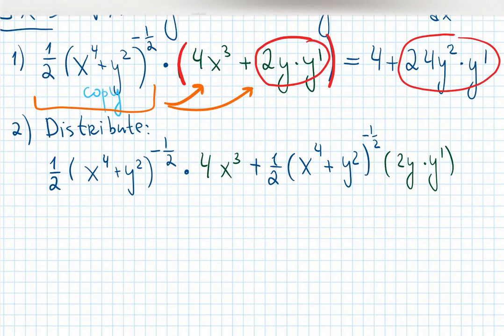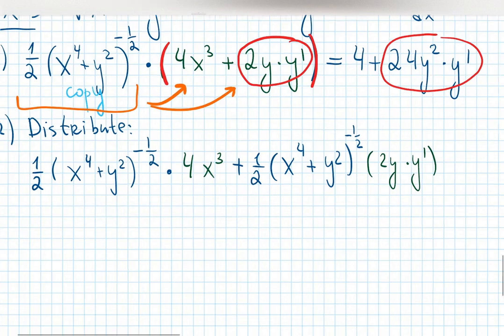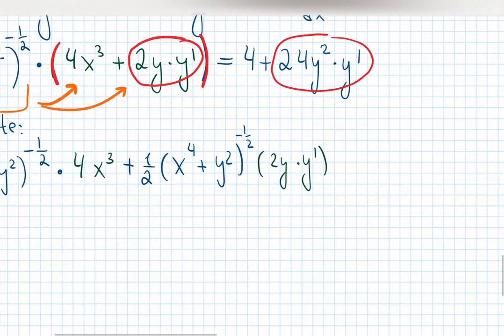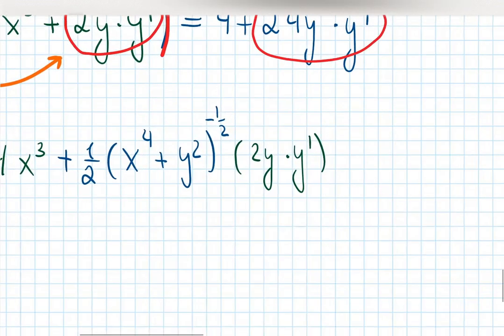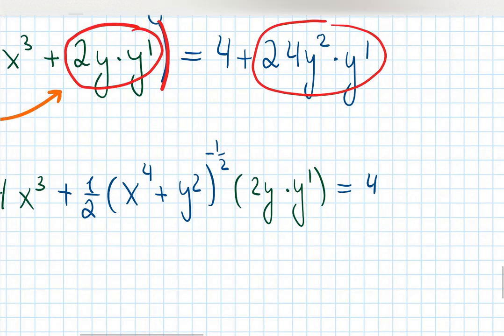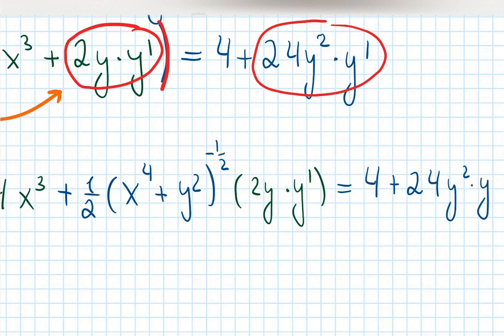By distributing, it becomes: one half times (x to the 4 plus y squared) to the negative one half times 4x cubed, plus one half times (x to the 4 plus y squared) to the negative one half times 2y·y prime. Don't forget the right hand side, just copied: equals 4, plus 24y squared times y prime.